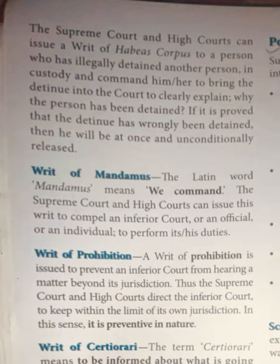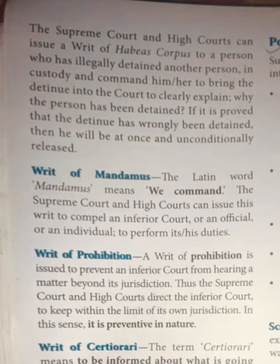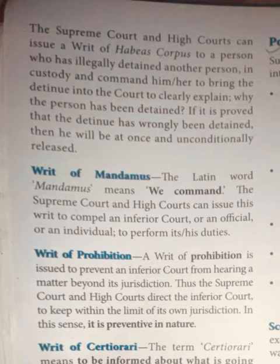Writ of Prohibition: A writ of prohibition is issued to prevent an inferior court from hearing a matter beyond its jurisdiction. The Supreme Court and High Court direct the inferior court to keep within the limits of its own jurisdiction. In this sense, it is preventive in nature — it acts as a safeguard.